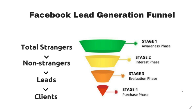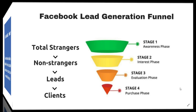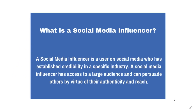People with hundreds of thousands of Twitter followers or YouTube subscribers — what are they doing that I'm not doing? What I found out is that the most effective marketers on social media are known as social media influencers. A social media influencer is a user on social media who has established credibility in a specific industry, has access to a large audience, and can persuade others by virtue of their authenticity and reach. The two most important factors are: establishes credibility in a specific industry, and has access to a large audience. Those were the two things I wasn't doing.